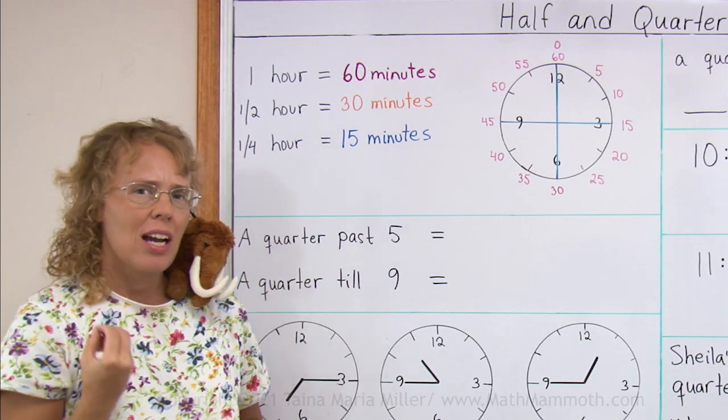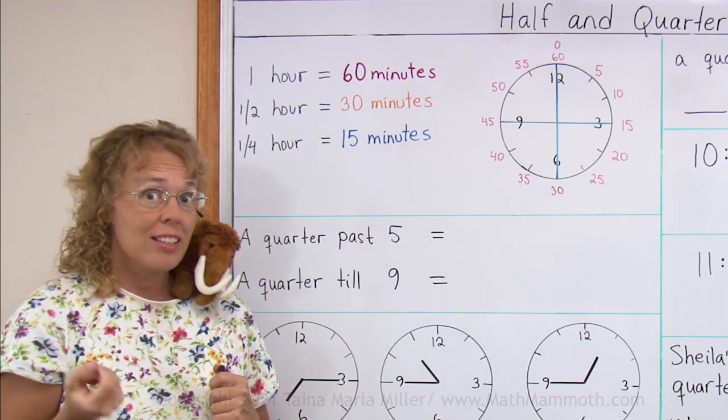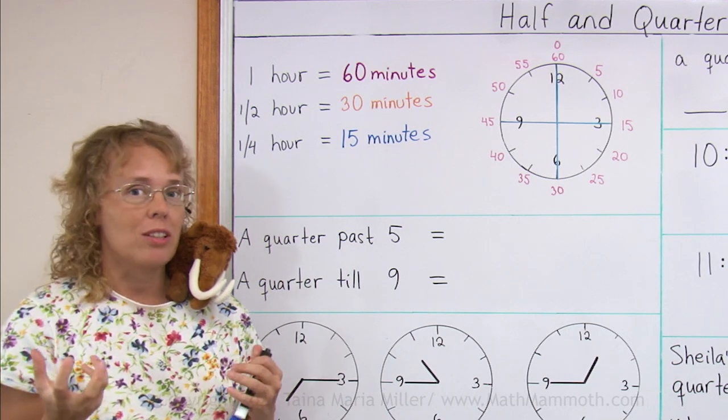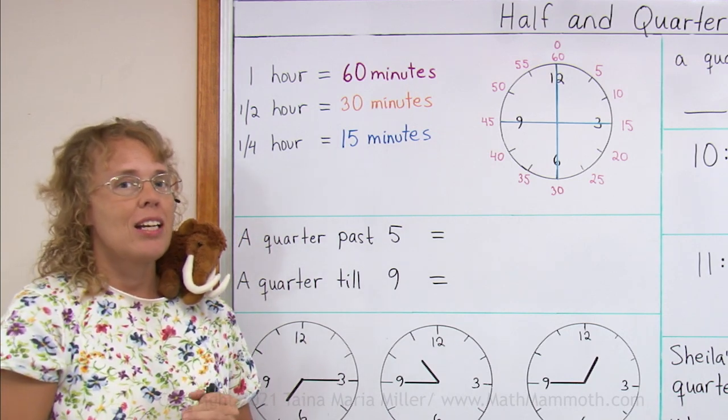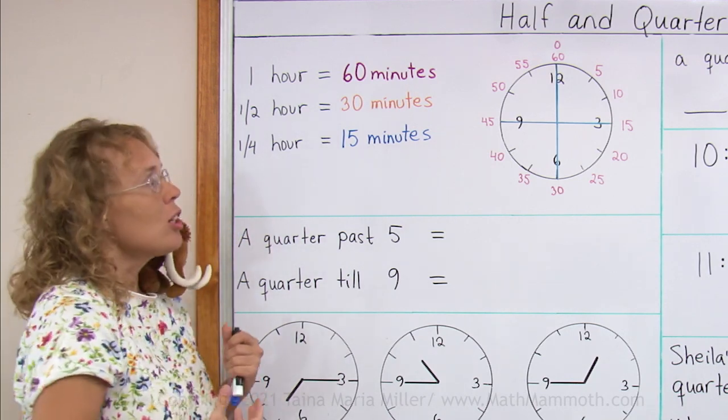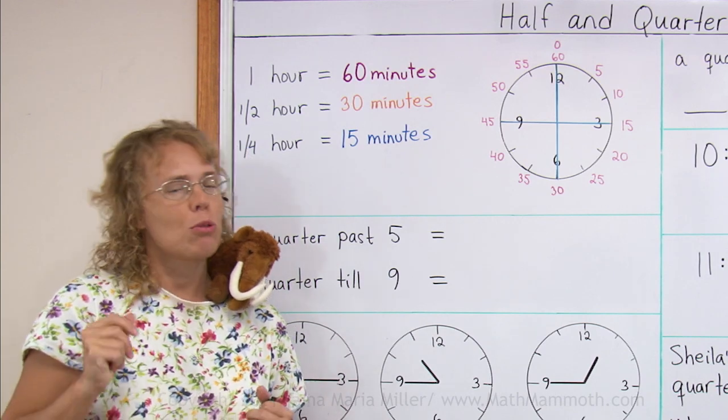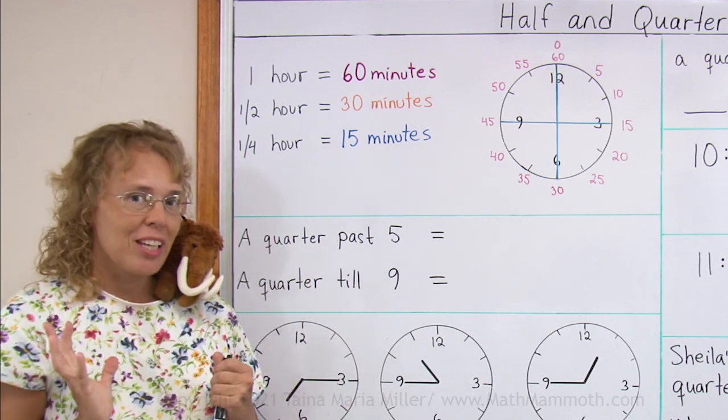And now we have two expressions that we use when telling the time that have the word quarter, quarter of an hour. And they could be, for example, a quarter past 3, a quarter past 11.